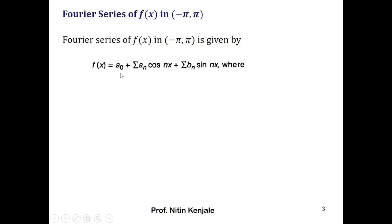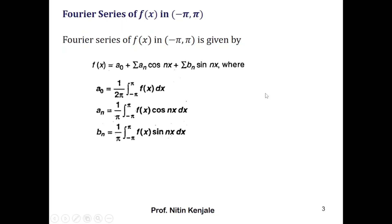The Fourier coefficients a-naught, aₙ, and bₙ are given as follows: a-naught is 1 over 2pi times the integral of f(x) dx over the limit minus pi to pi, and aₙ is 1 over pi times the integral of f(x) cos(nx) dx over the limit minus pi to pi.